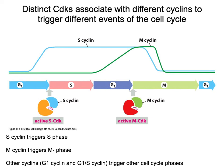There are additional cyclins for G1 that allow for that progression as well. Each cyclin and CDK pairing is specific for each of the different checkpoints.